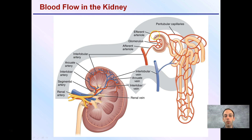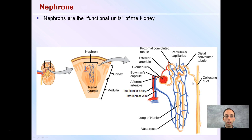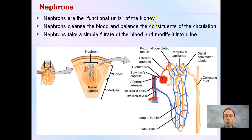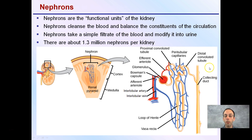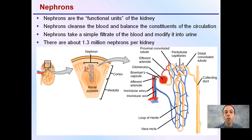Each nephron has a very distinctive structure that we're going to go over in detail. Nephrons are the functional units of the kidney — they cleanse the blood and balance the constituents for circulation, constantly filtering the blood. They take a simple filtrate of blood and modify it, ultimately forming urine. There are 1.3 million nephrons per each kidney.